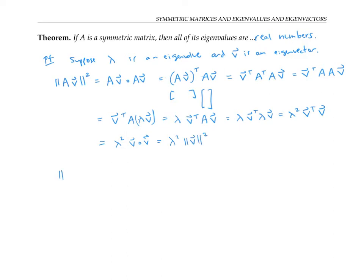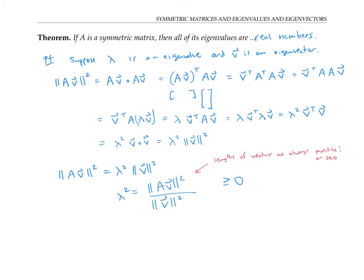Therefore, putting the far left side and far right side of this string of equations together, I get the length of AV squared equals lambda squared times the length of V squared. Dividing by the length of V squared — which is valid since V is an eigenvector and cannot be the zero vector — lambda squared equals the length of AV squared over the length of V squared. The numerator is greater than or equal to zero, and the denominator is strictly positive, so lambda squared is greater than or equal to zero. Therefore, we can take the square root, and lambda is a real number.